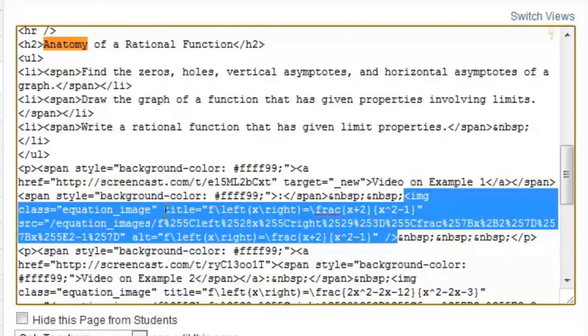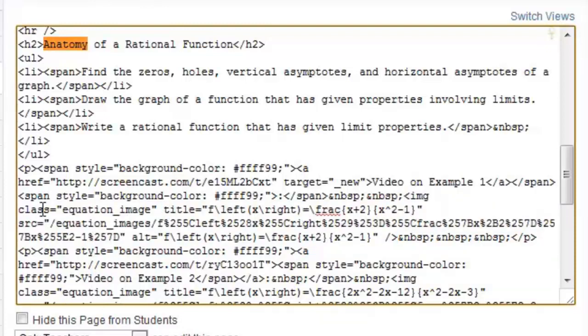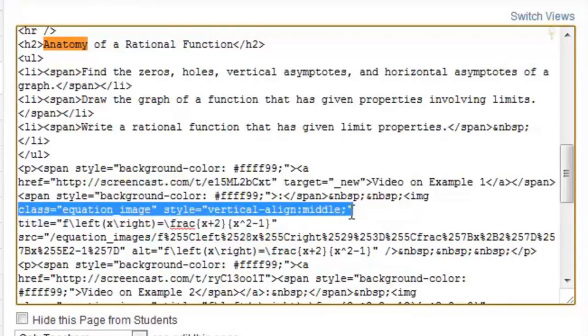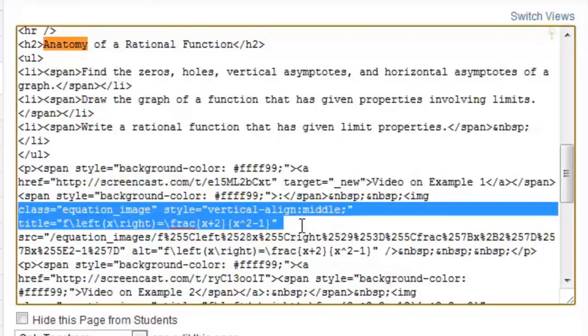And what we need to do is insert that little bit of text that we have right after the class 'equation_image.' So right here I'm just going to place my cursor and use Control+V or Command+V on a Mac. And make sure there's a space after it. And so basically I've just inserted between 'class' and 'title' that set of text: style="vertical-align:middle;"